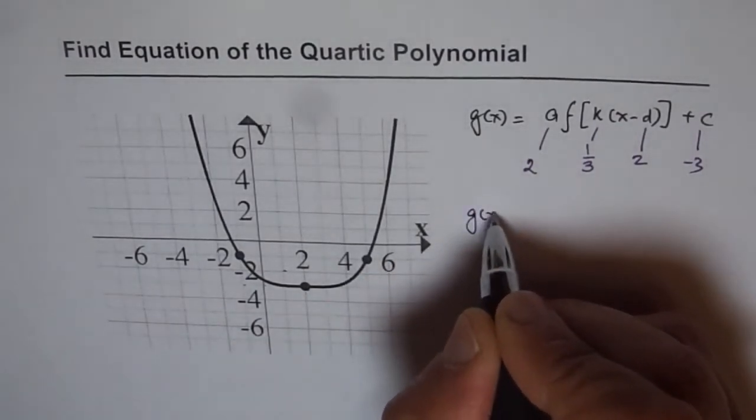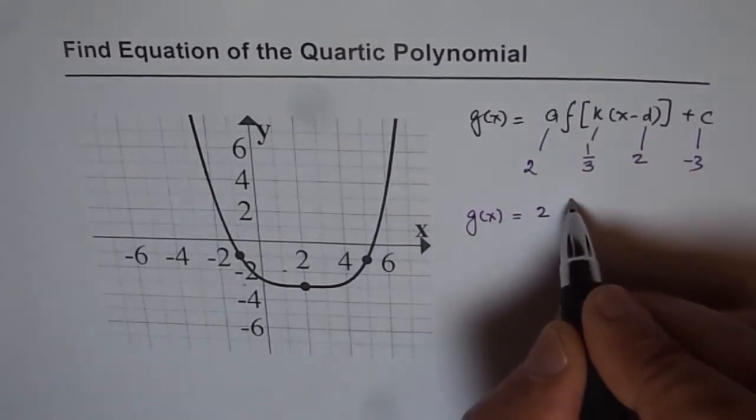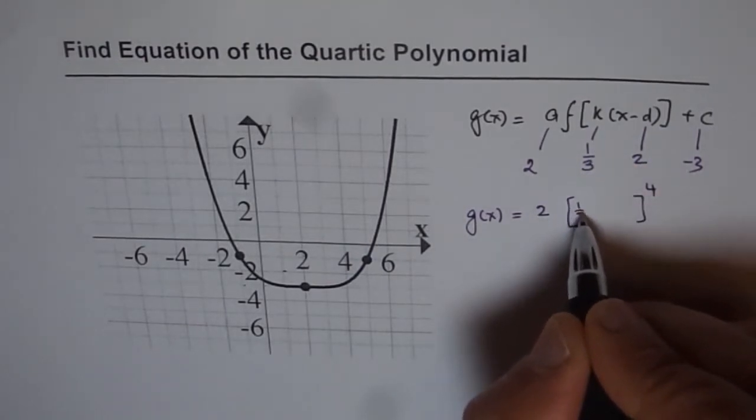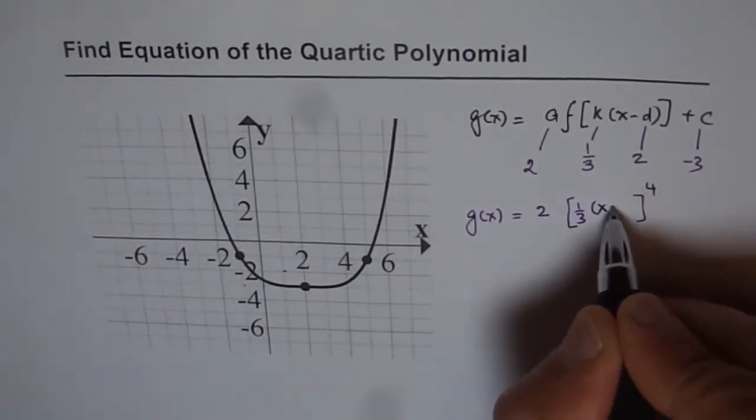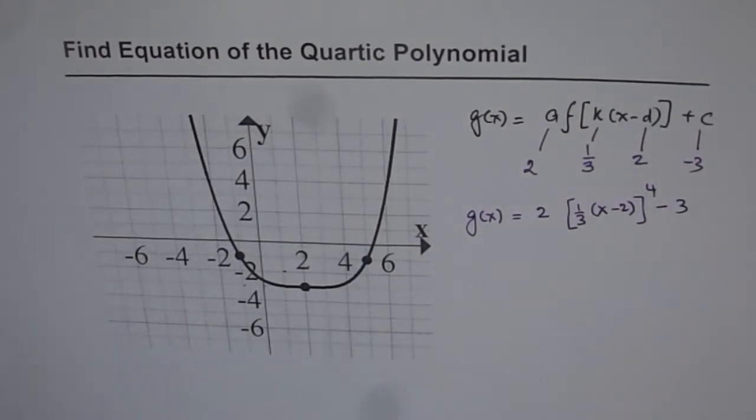And so, we can write this function as g of x equals 2, 2 times. And the function here is to the power of 4. k value is 1 over 3. And we have x minus 2 minus 3. So, that becomes our equation.